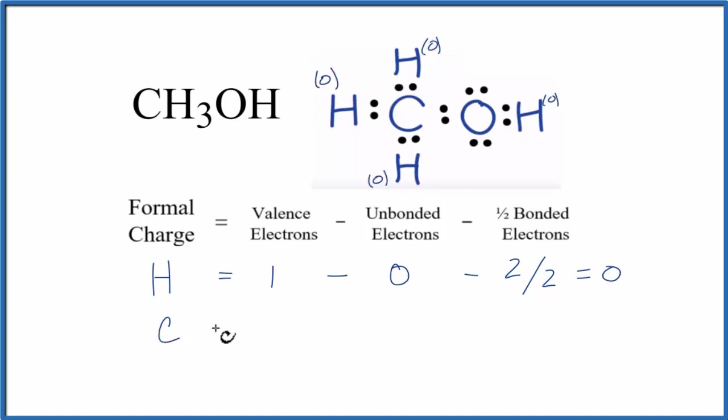Carbon is in group 14, sometimes called 4A. It has four valence electrons. Each of these pairs of electrons are involved in chemical bonds, so we don't have any unbonded valence electrons.